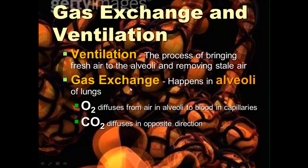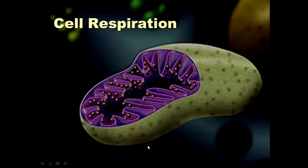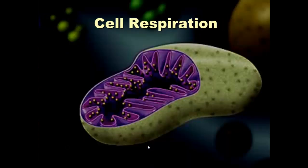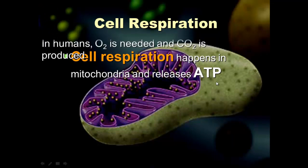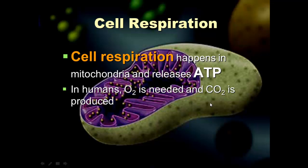When we say gas exchange, we're literally talking about oxygen being traded for carbon dioxide. Cell respiration is a whole separate process, so be careful. When you say 'respiration,' we assume you mean cell respiration, which happens in mitochondria and releases ATP. In humans and most aerobic organisms, oxygen is needed and carbon dioxide is produced as the waste product.